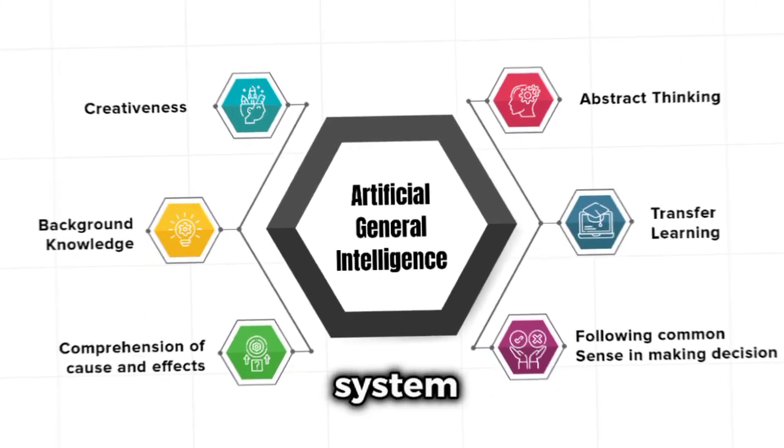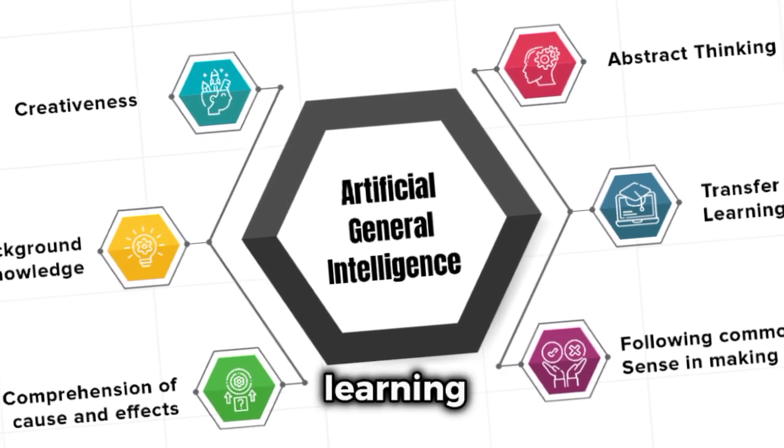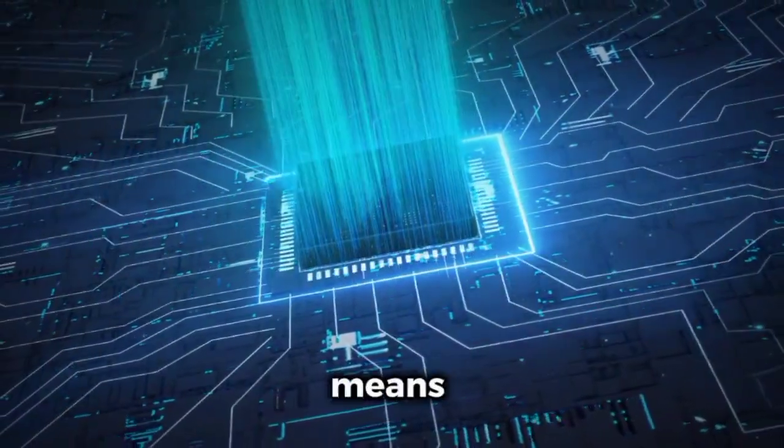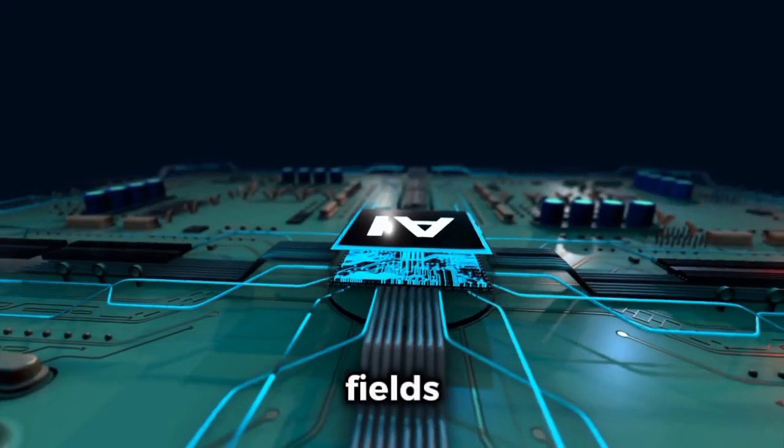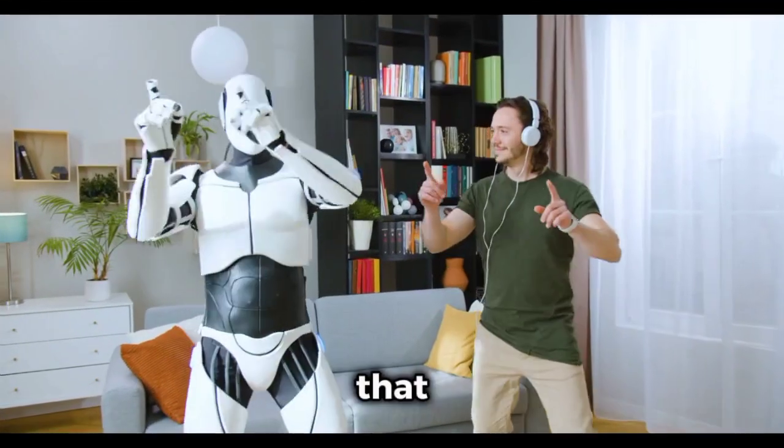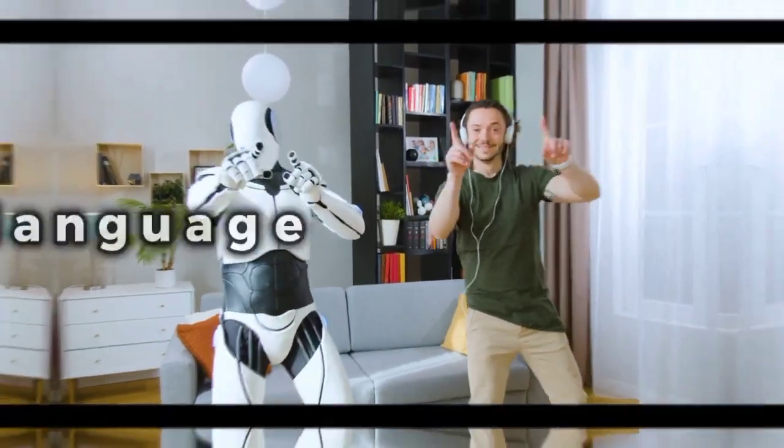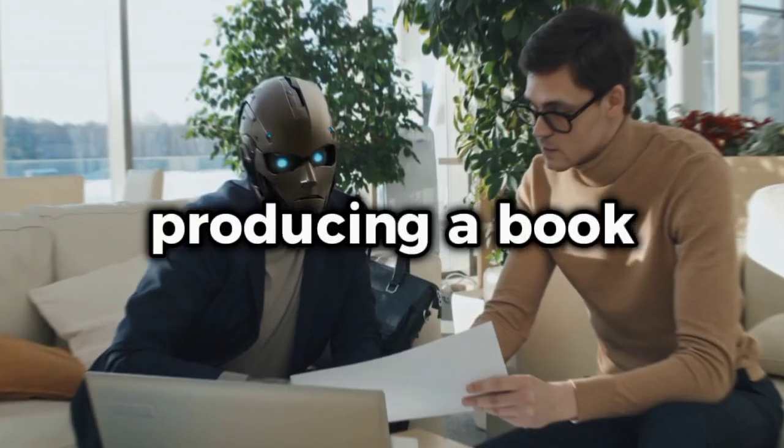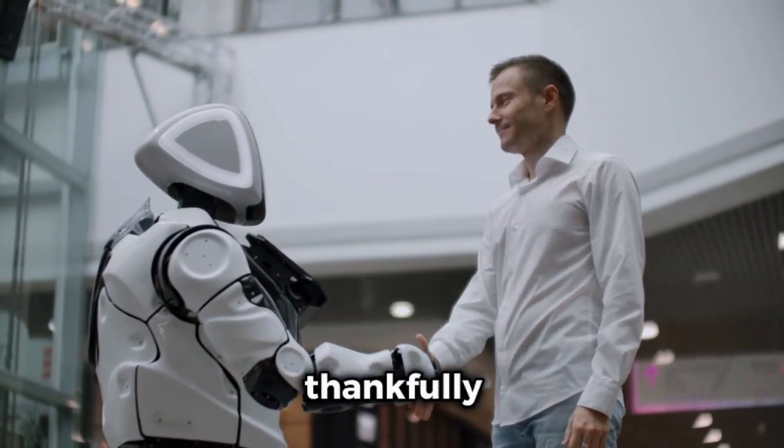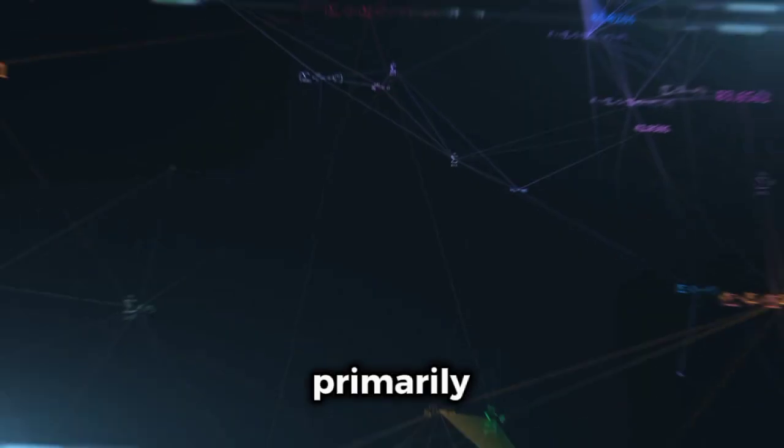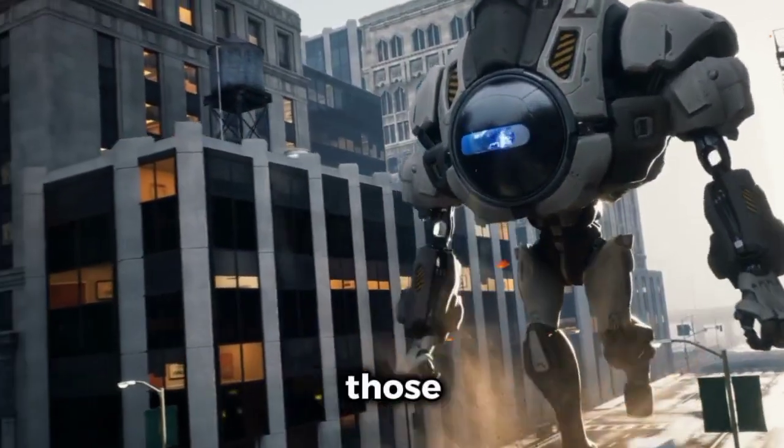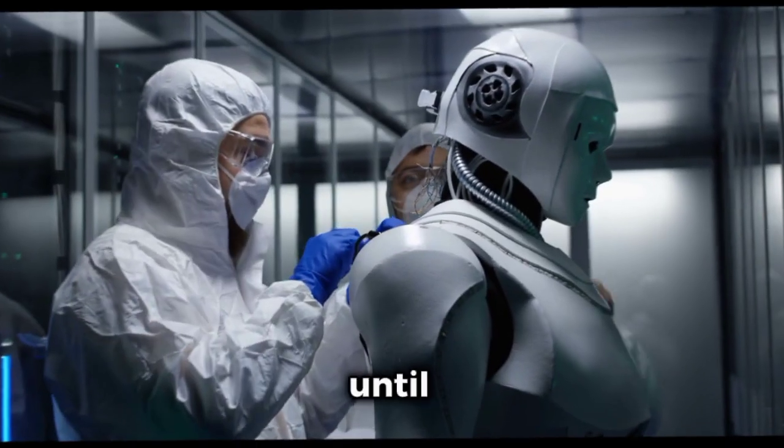An AGI system would be capable of comprehending, learning, adapting, and applying knowledge across a wide range of tasks. This means it can excel in several fields, think like a human, and effectively do any intellectual activity that a human person can, like learning a new language, producing a book, or even comprehending and responding to human emotions. Thankfully, these AI systems are primarily theoretical, but you better start preparing for AI invasion because those scientists aren't going to stop until they reach their goal.